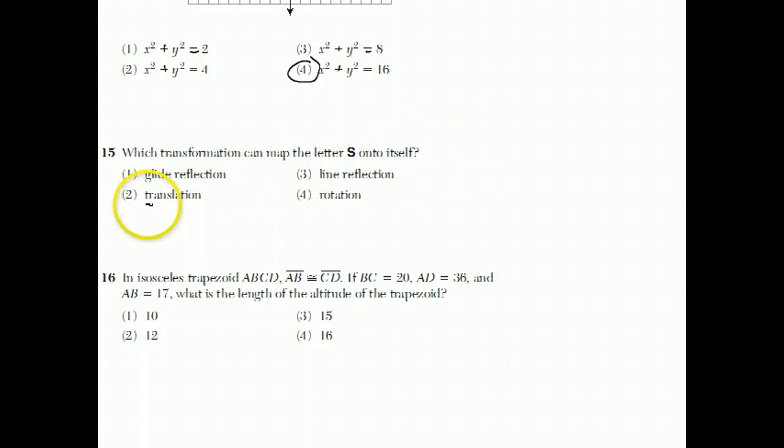So, which transformation can map the letter S onto itself? If you try these different things, a translation for choice 2, for instance, would take the S and kind of move it over here. It's still an S, but it's not on top of itself. A glide reflection similarly, it reflects it and then moves it over, so it's not in the same place. Because a line reflection, if I take an S and I do a line reflection, it actually becomes a backwards S, so that's not onto itself. But when you rotate an S 180 degrees, it ends up, let's say this point was here, it ends up upside down, but still looking like an S. Answer here is choice 4.